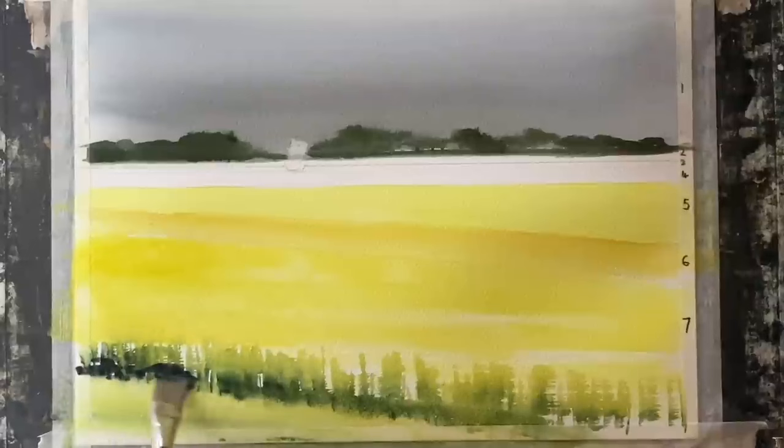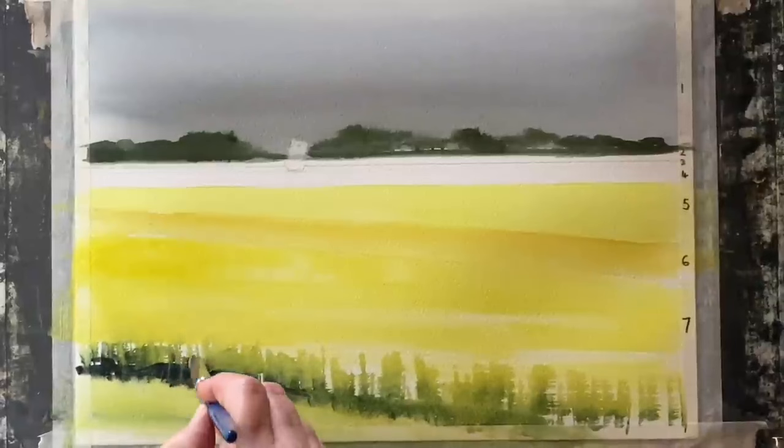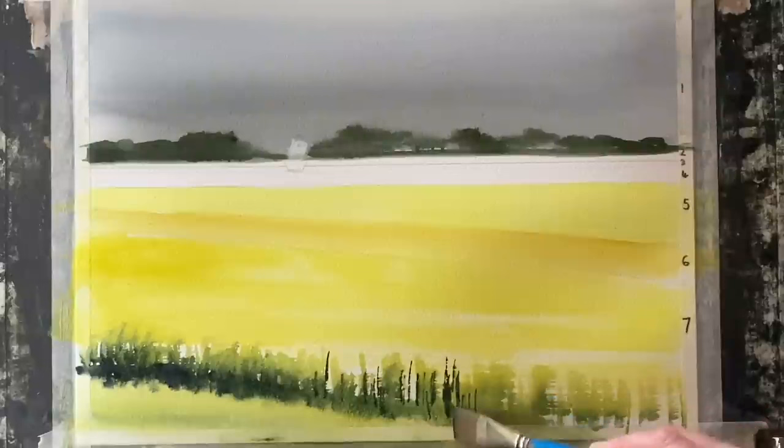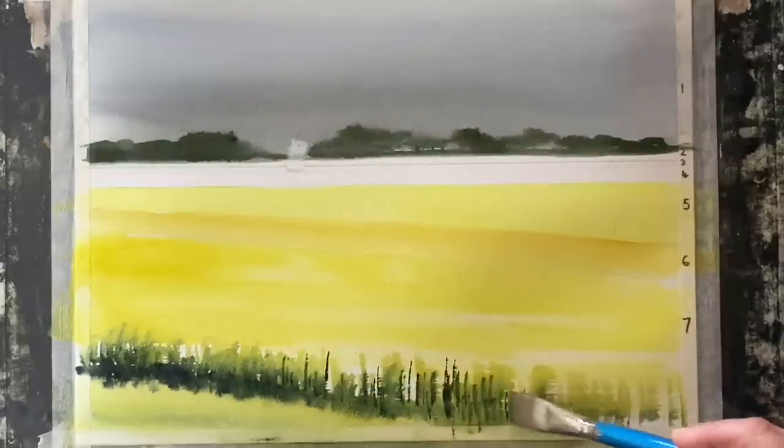I'm putting in the suggestion of stems, leaves and flowers, then building up the darks with more Payne's grey and perylene green, adding some of the darks to show the height and size of the crop of canola flowers.